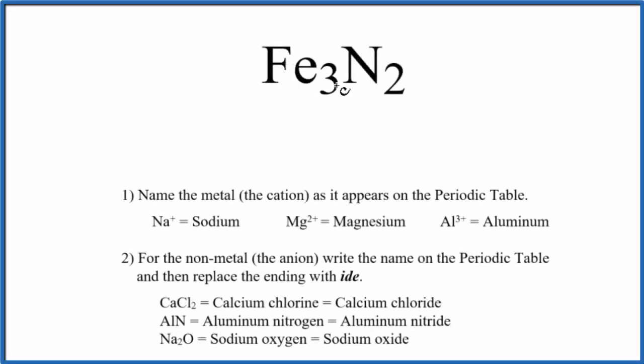To write the name for Fe₃N₂, we first need to realize that we have a metal and non-metal here. When we have metals and non-metals bonded together, that's an ionic compound. So we're going to write the name considering this as an ionic compound, and we're going to use these rules.